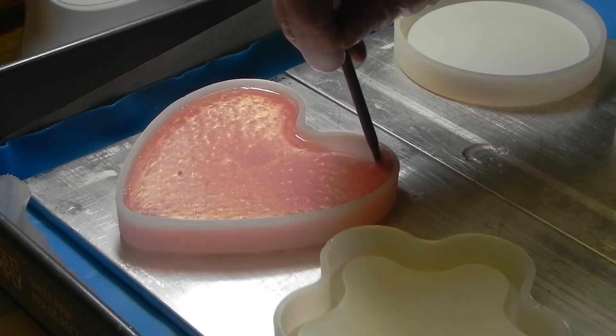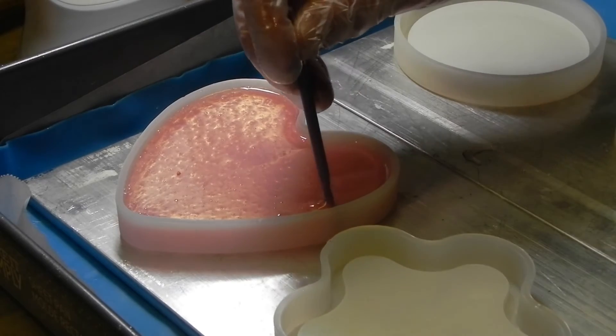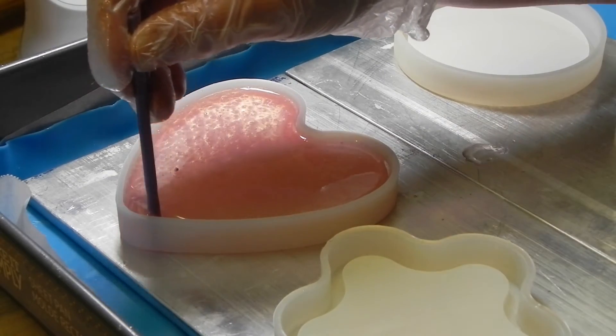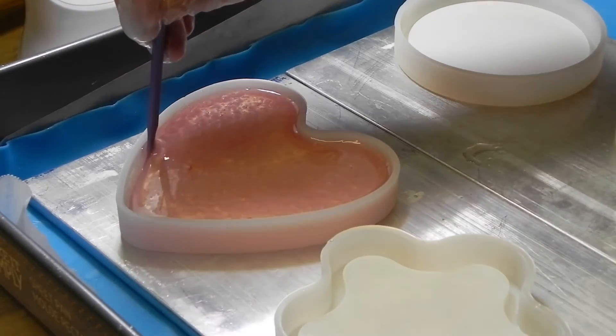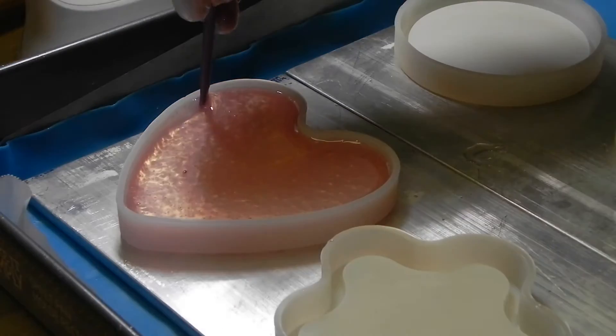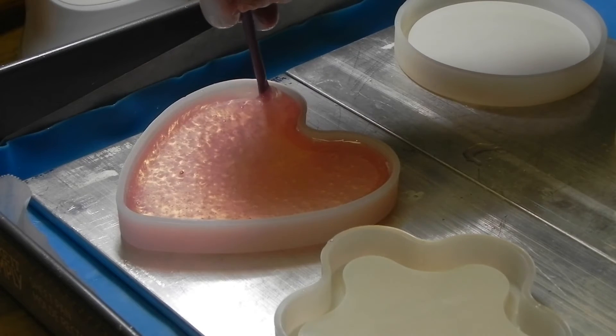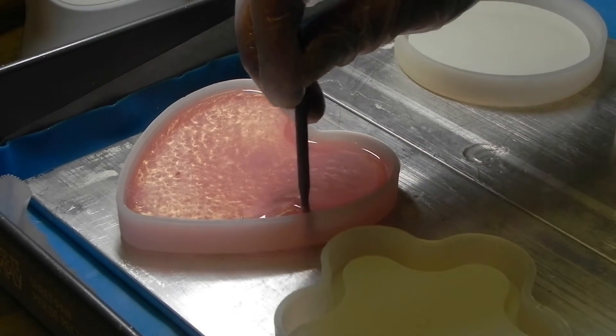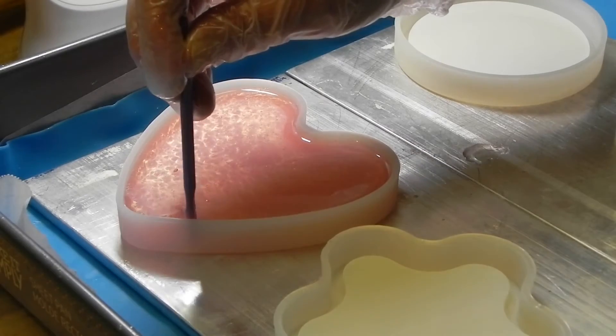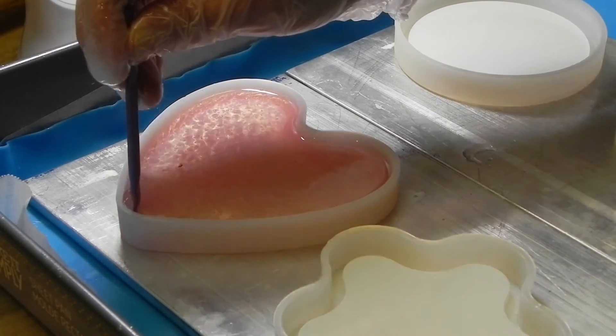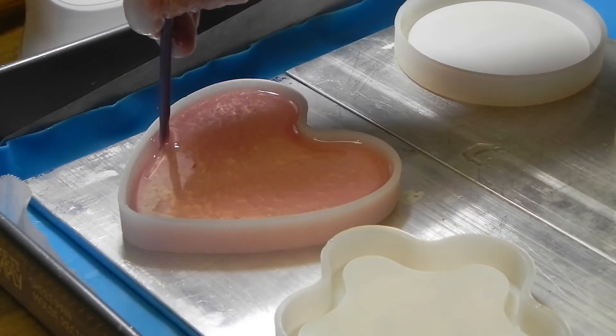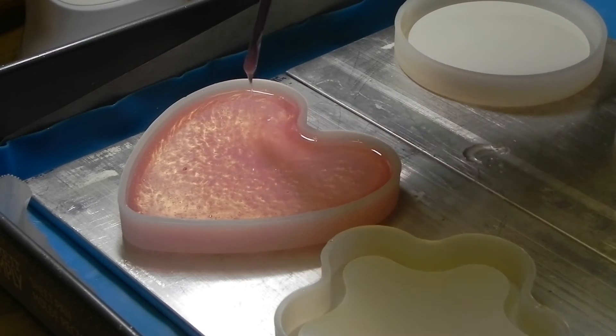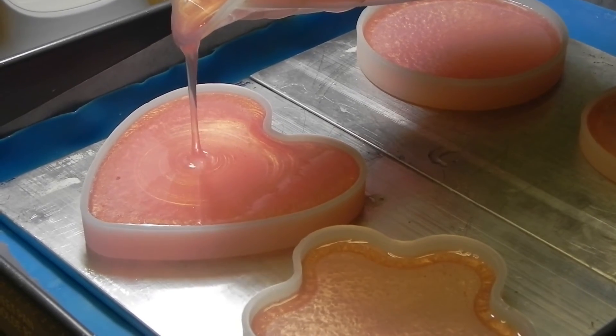You can gently scrape the edges of the bottom of the mold to bring any settling bubbles. Proceed through the rest of the molds.